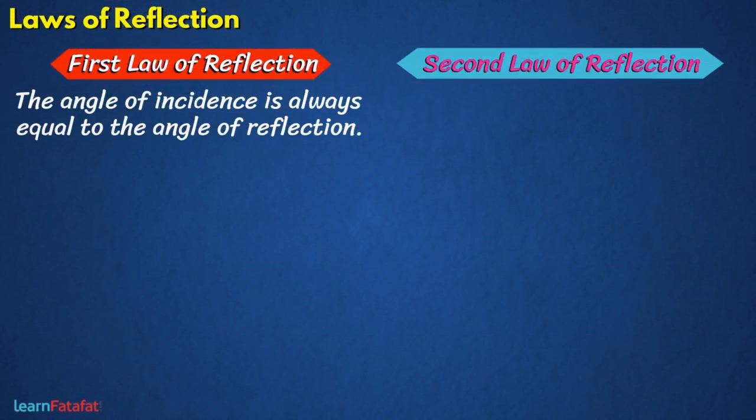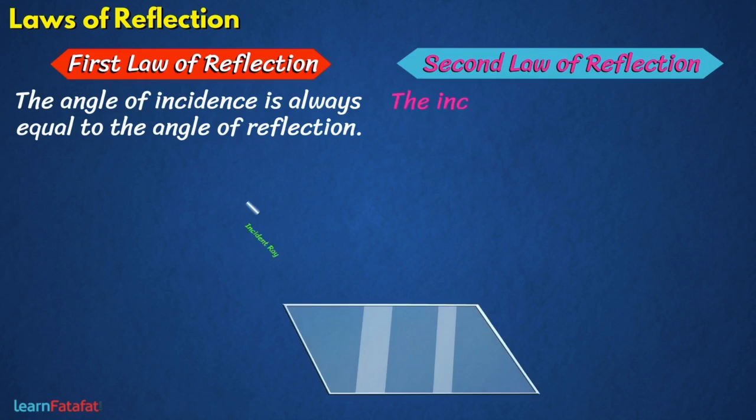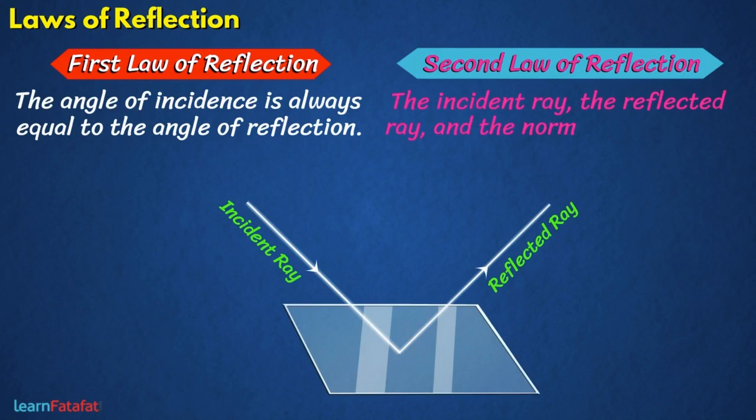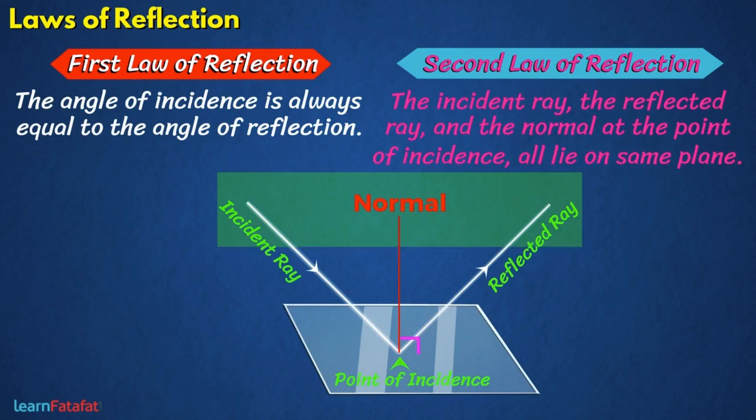The second law of reflection states that the incident ray, the reflected ray, and the normal at the point of incidence all lie on a same plane.